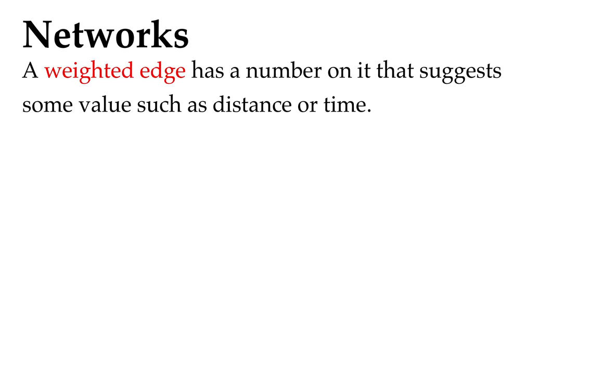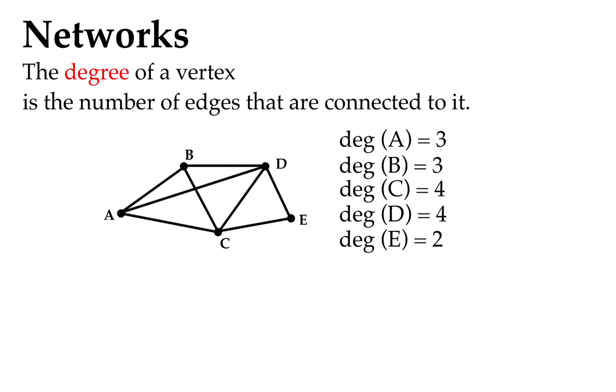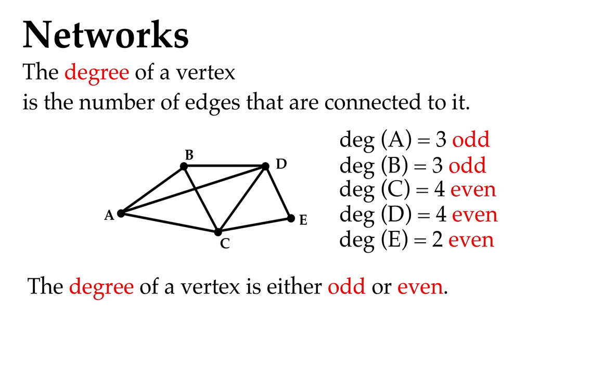You've got a weighted edge which has a number on it. It suggests some value such as distance or time. So that's 286km between Sydney and Canberra there, so that red line is a weighted edge. A degree of a vertex is the number of edges that are connected to it. So here you've got various degrees. The degree of A is 3 because there are 3 edges connected to it, and we can also state whether a degree of a vertex is either odd or even.